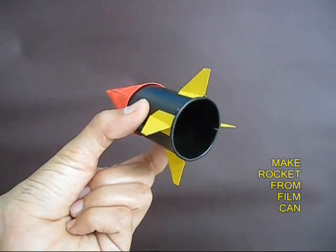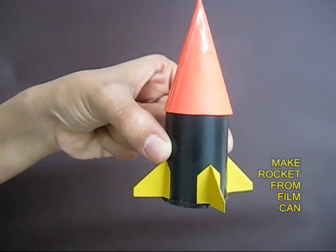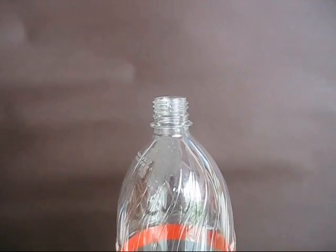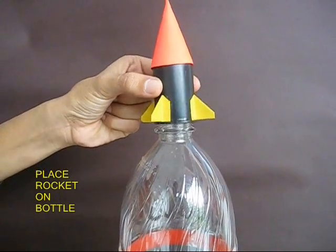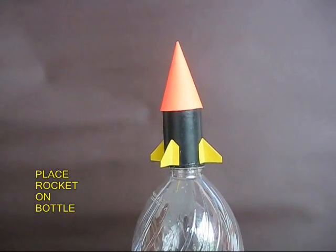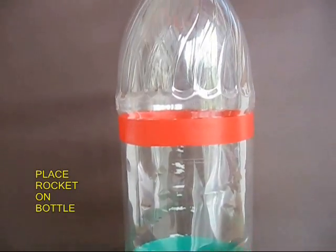Now you can take the film can and make a very nice rocket out of it with a cone and 4 fins. Place the rocket on the mouth of the bottle and once again you are ready to launch the rocket.